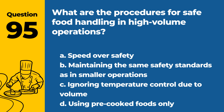Question 95. What are the procedures for safe food handling in high-volume operations? a. Speed over safety. b. Maintaining the same safety standards as in smaller operations. c. Ignoring temperature control due to volume. d. Using pre-cooked foods only. Answer: b. Maintaining the same safety standards as in smaller operations. Volume should not compromise food safety standards.